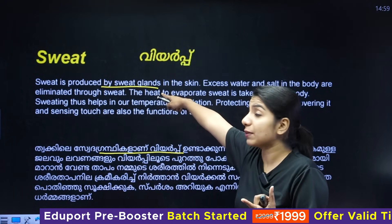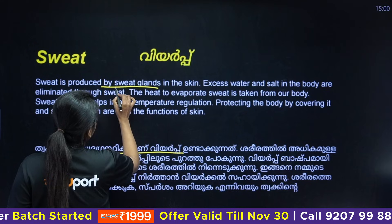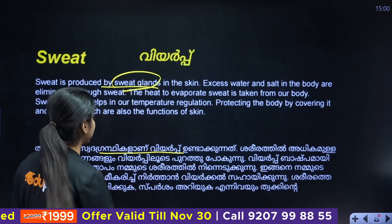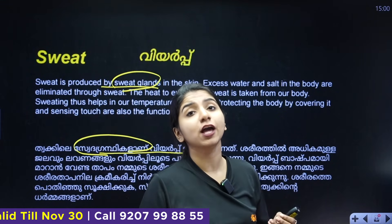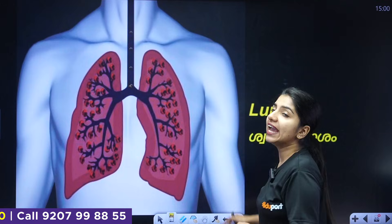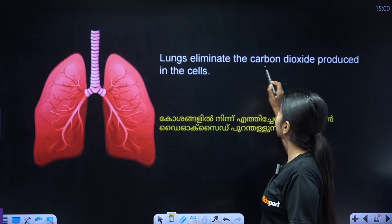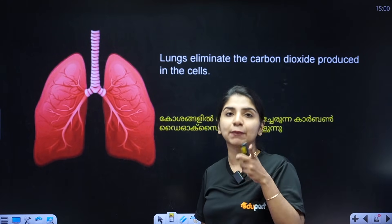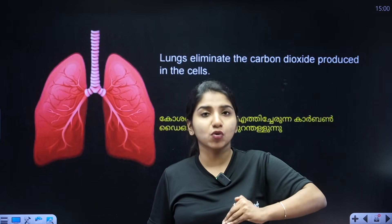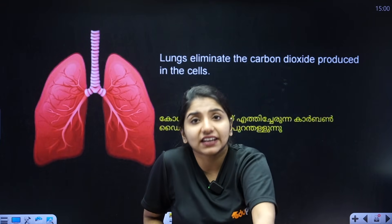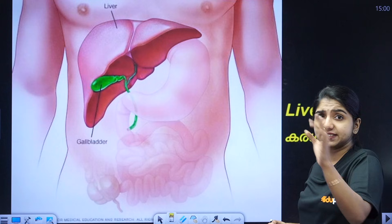Excretion also occurs through the skin via sweat glands. The lungs excrete carbon dioxide. Sweat glands are found in the skin. The lungs release a large amount of carbon dioxide as part of excretion.